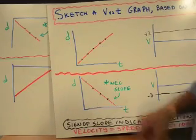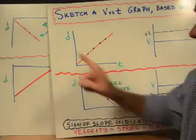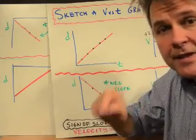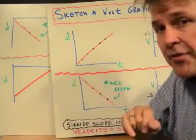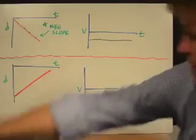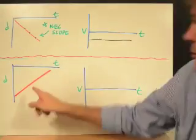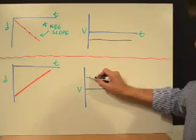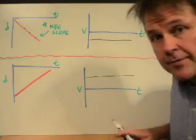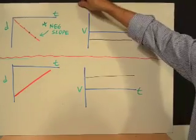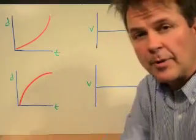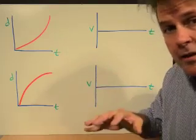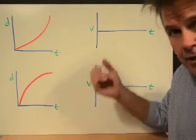That would be the same velocity — the difference is where you're located. A DT graph tells you where you're located; a VT graph mentions nothing about location. In this case we have a positive slope and a constant speed, so that would be our VT graph. Remember: don't just copy these down — work with me, pause, predict, and then check your answers.